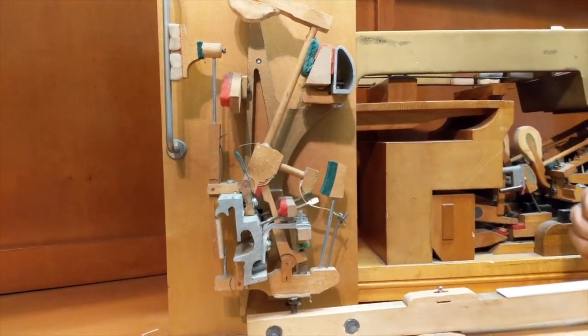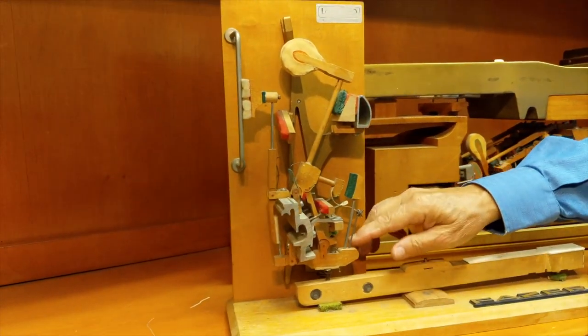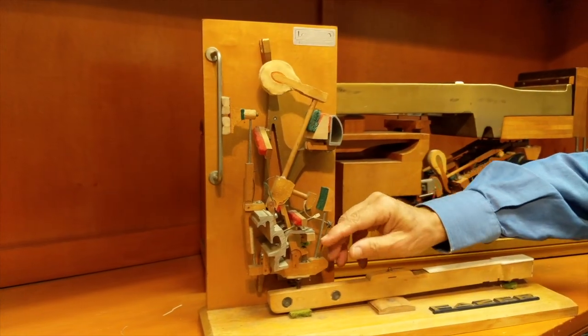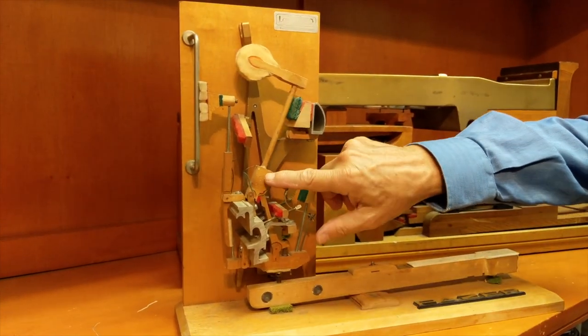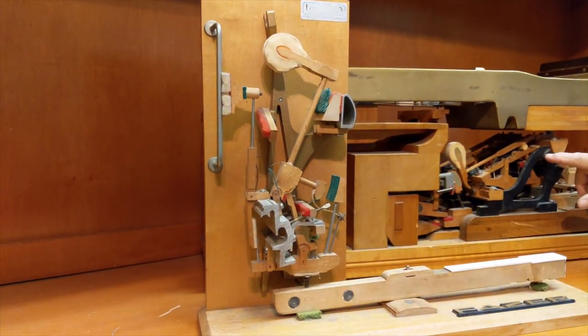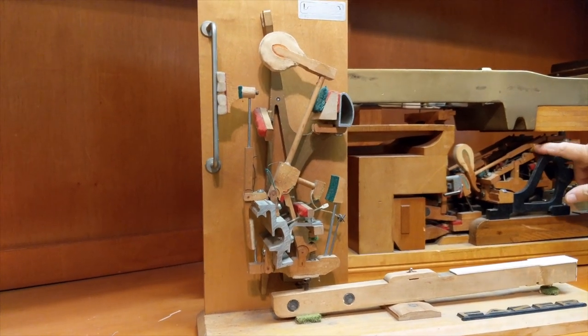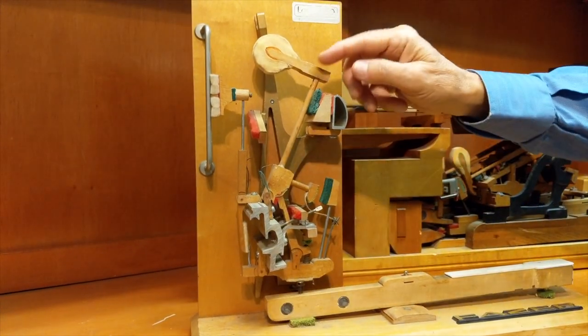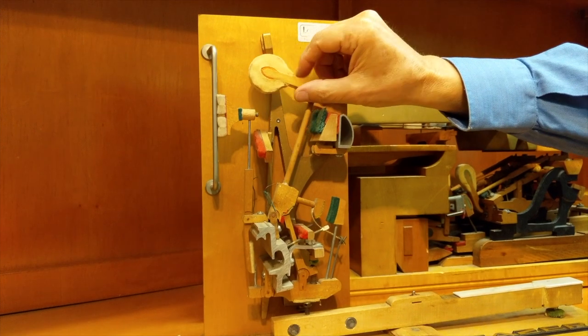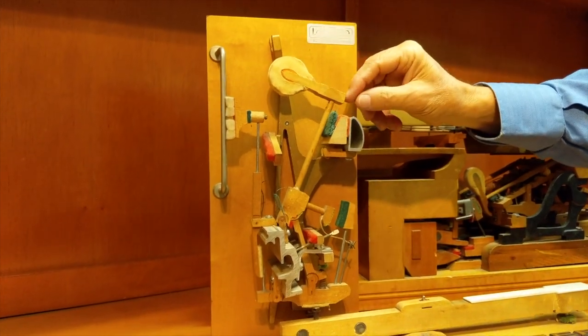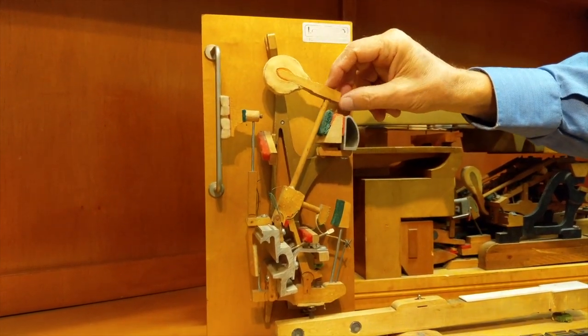Now the upright action and the grand action have many similar components. You have a whippen, you have a jack, you have the hammer butt. Over here we would call it the hammer shank and flange and knuckle. And you have of course the hammer. And the hammer shaped a little different in the back. The front is about the same thing, about the same weight.